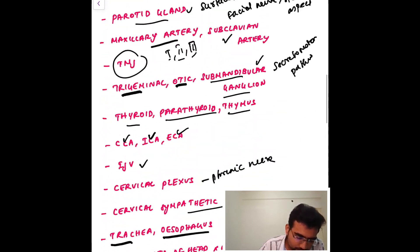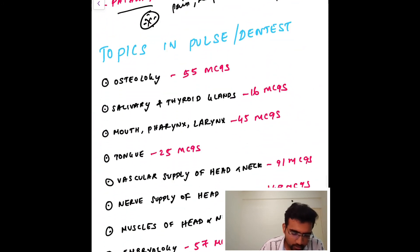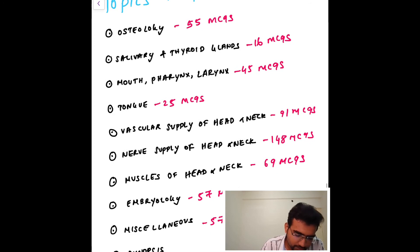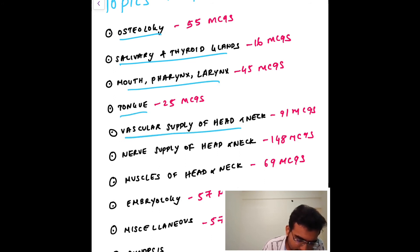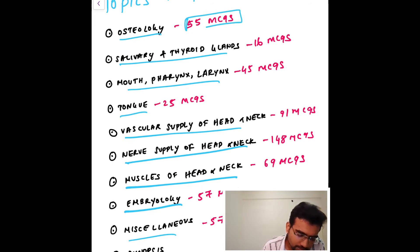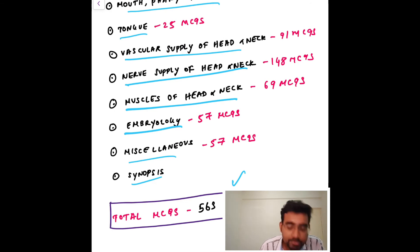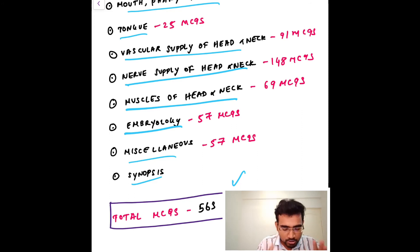These are all the topics you should read from the textbooks. Now, looking at the Pulse of the Dentist guide, topics include osteology, salivary glands, thyroid glands, mouth, pharynx, larynx, tongue, vascular supply, nerve supply, muscles, embryology, miscellaneous, and synopsis. The total number of MCQs across all these topics in Pulse of the Dentist comes to 563 MCQs.